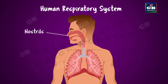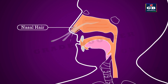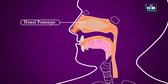The human respiratory system begins with a pair of nostrils. Air enters the nose through the nostrils. Thin hairs present in the nasal passage filter the dust particles that we breathe in. The nasal cavity is lined with mucus, which makes the air moist and humid.